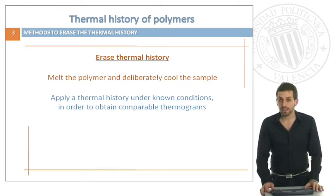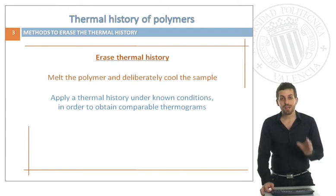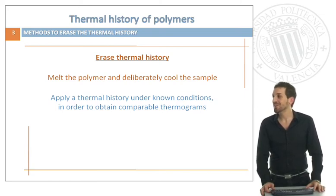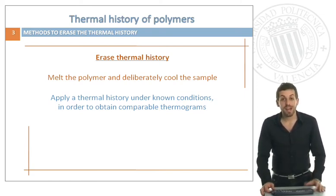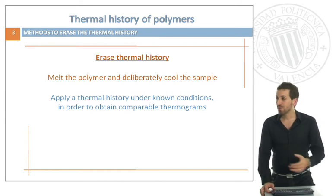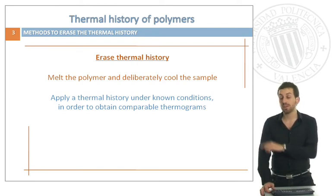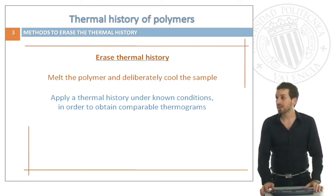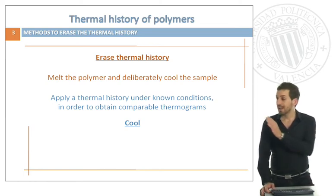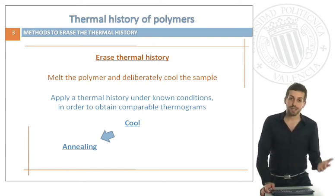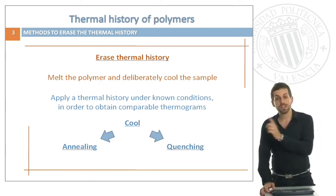If we are not interested in them we have to erase this thermal history. How can we do that? We have to first melt the polymer and deliberately cool the sample, that means apply a known and specific cooling scan. Then we will apply this thermal history under known conditions — this is the cooling I was referring to — in order to obtain comparable thermograms. This can be done by different methods: we can anneal or quench, as we will see.